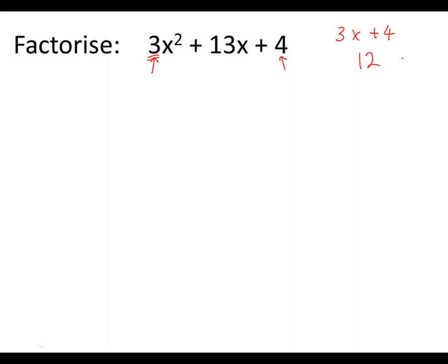And then what I want to do with that 12 is I want to split 12 up into two numbers, which when you add them up, they will equal this middle number. So two numbers that times to give 12 but add up to give 13.